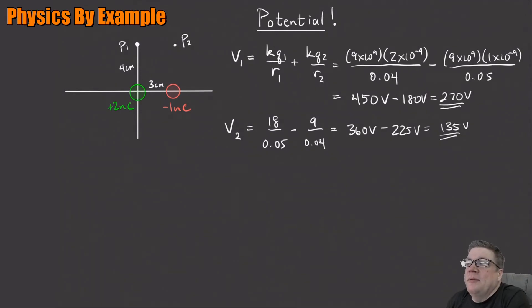So there's the potential at points one and two. Very simple. So if you have a whole bunch of charges and you want to figure out the potential due to a whole bunch of charges, it's easy. You just do KQ over R for each one. And then you just add them all up. Can you get a negative voltage? Sure you can. That's just fine.